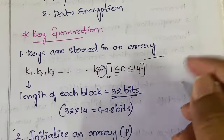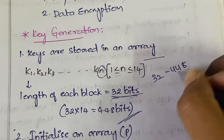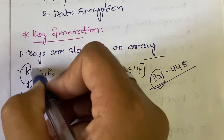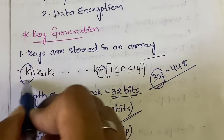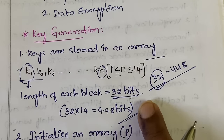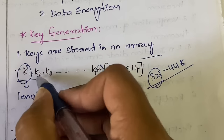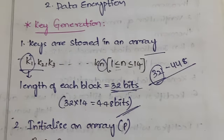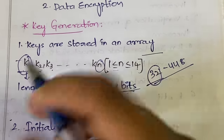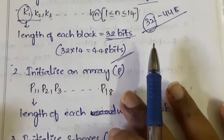If you want a 32-bit key you take only k1; for 64 bits you take k1 and k2; and so on. The minimum is 1 array and the maximum is 14, because 14 times 32 is 448 bits — the maximum key size. Between 32 and 448 bits you can take anything, but it must be a multiple of 32. According to your key size, you pick the corresponding number of key arrays.